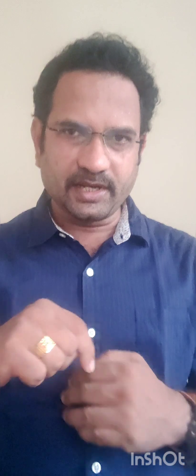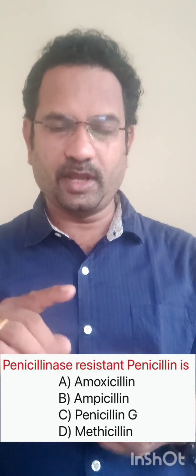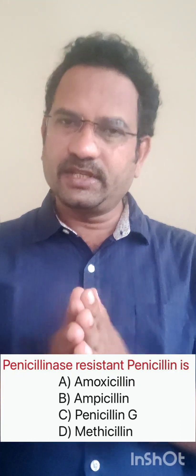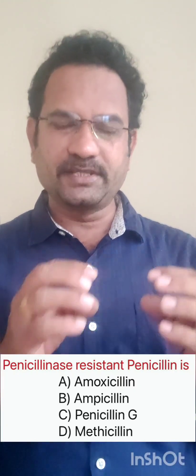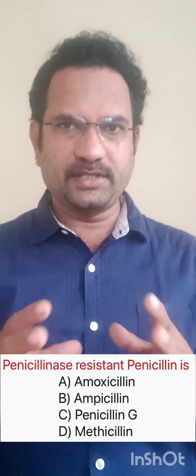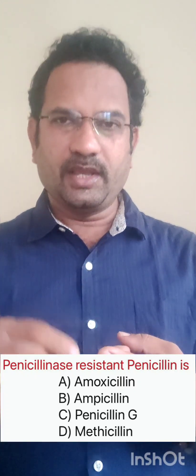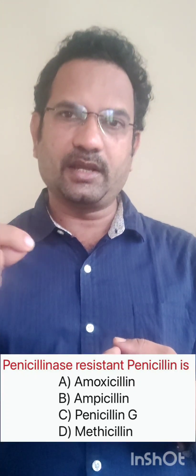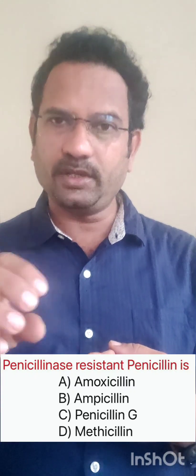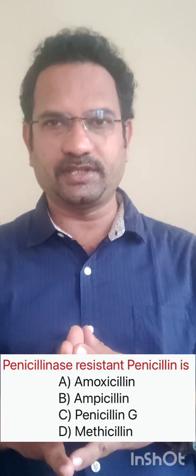Let us see the next question. Penicillinase-resistant penicillin. Options are amoxicillin, ampicillin, penicillin G, methicillin. The first known old penicillins are penicillin G and penicillin V. There are a lot of problems with penicillin G — it cannot be taken orally because it is acid-sensitive. Also, bacteria started producing penicillinase enzyme which started destroying penicillin G. Hence, newer penicillins were synthesized.